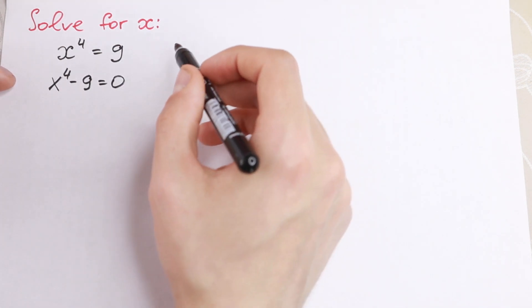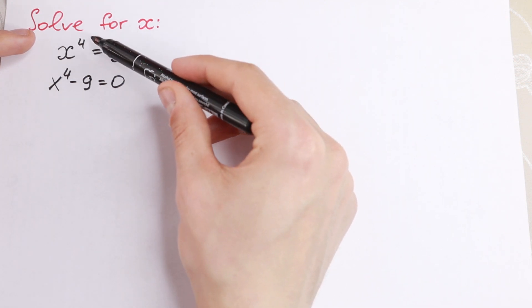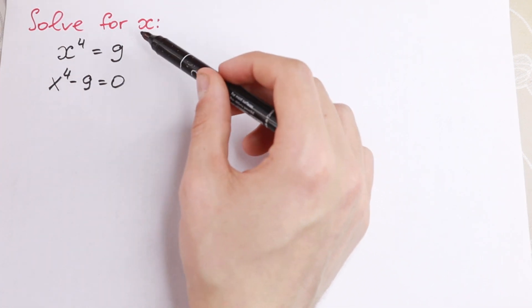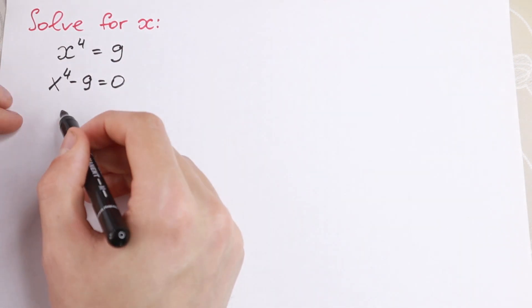Moreover, right here in this case we could just take fourth root from both sides and we will have x equal to plus minus fourth root of 9, something like that. But in this case, take a look, interesting moment.